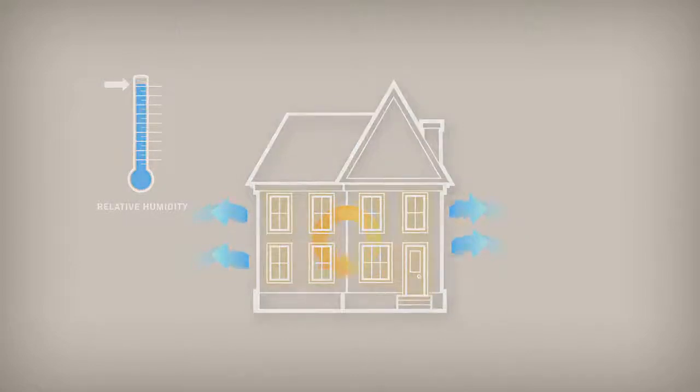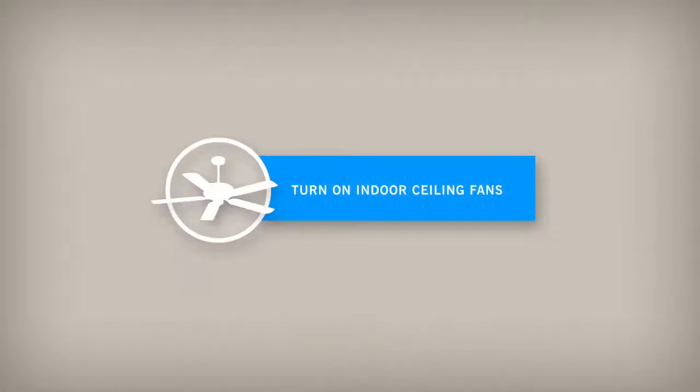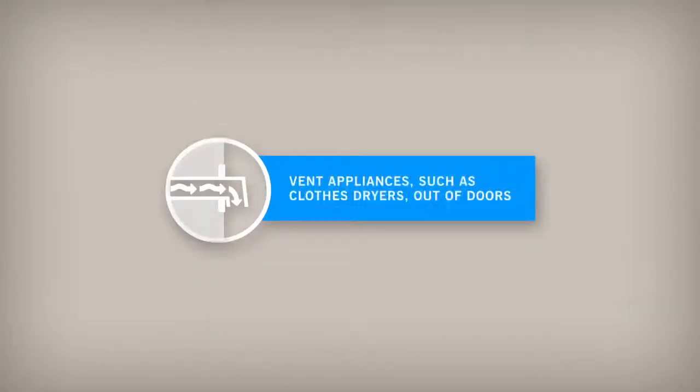To reduce condensation formation, you can lower the humidity in your home in the following ways. Use an exhaust fan when cooking and showering. Turn on indoor ceiling fans. Do not use humidifiers. Vent appliances such as clothes dryers out of doors.